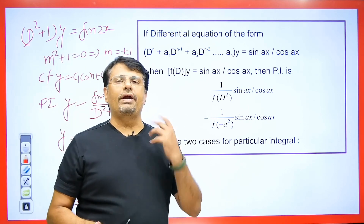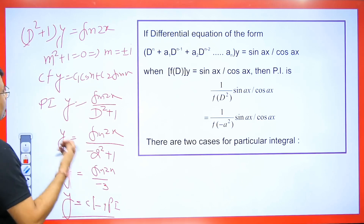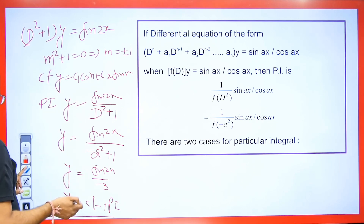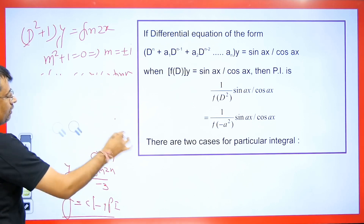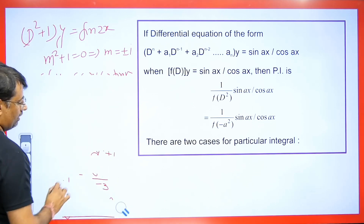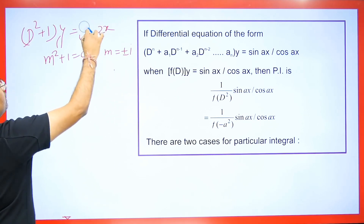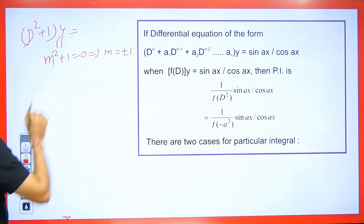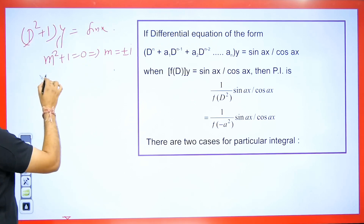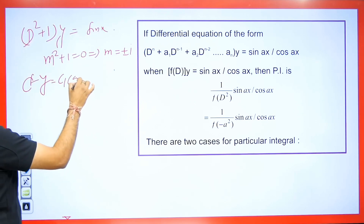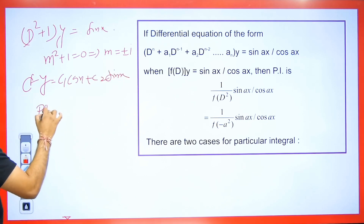Now the question is: what if the denominator becomes 0? I will take this same question. If we have 0 in the denominator, what do we do? Let's take an example. If the same equation is given but with sin x instead of sin 2x, the CF remains the same: y = c₁cos x + c₂sin x, but its PI will change.